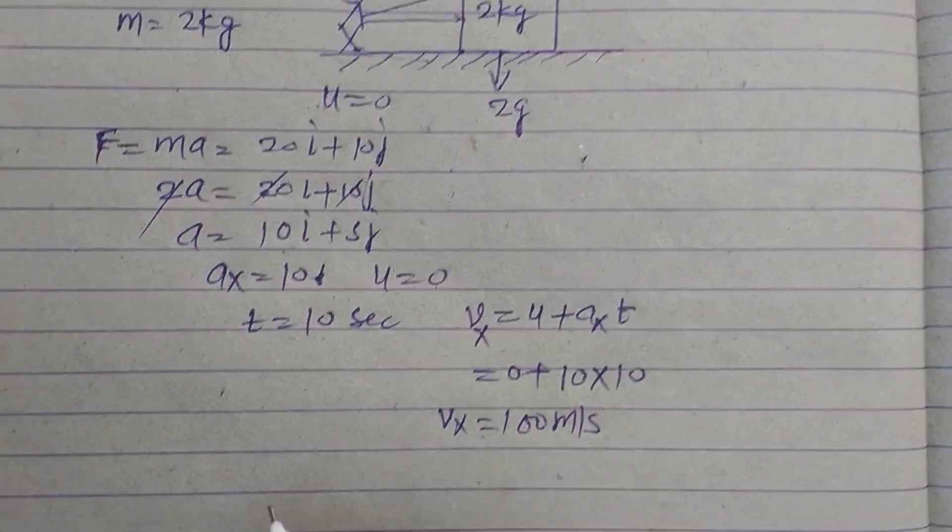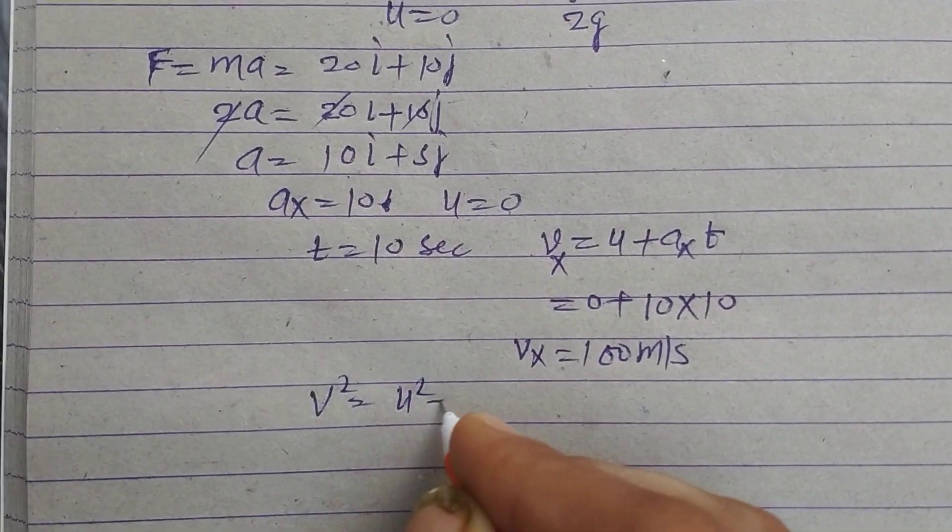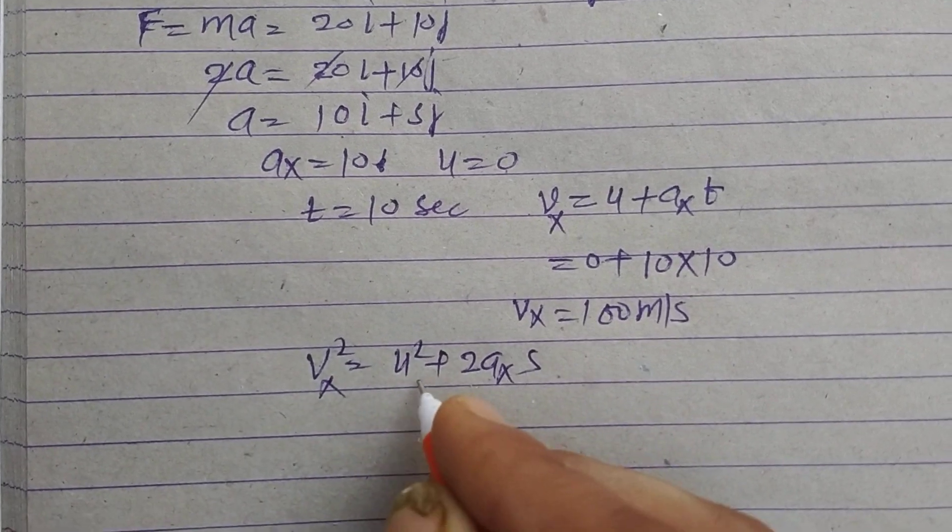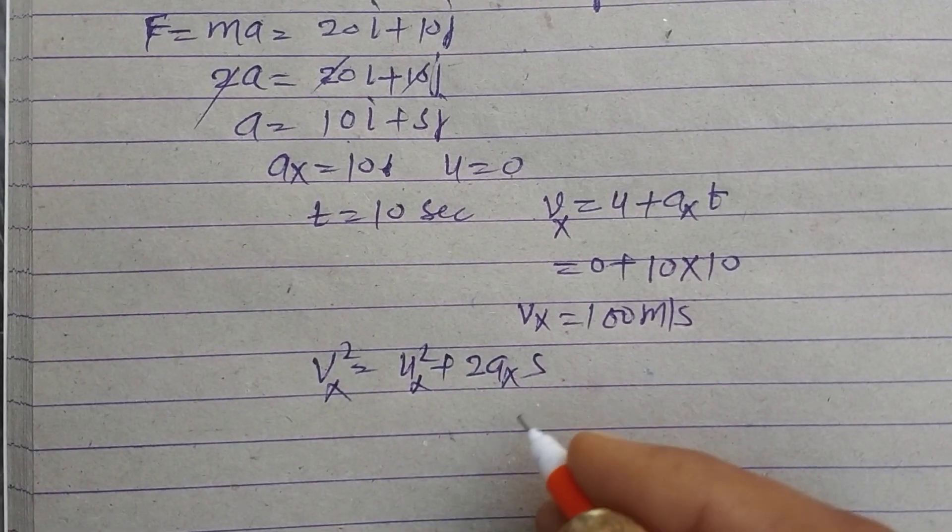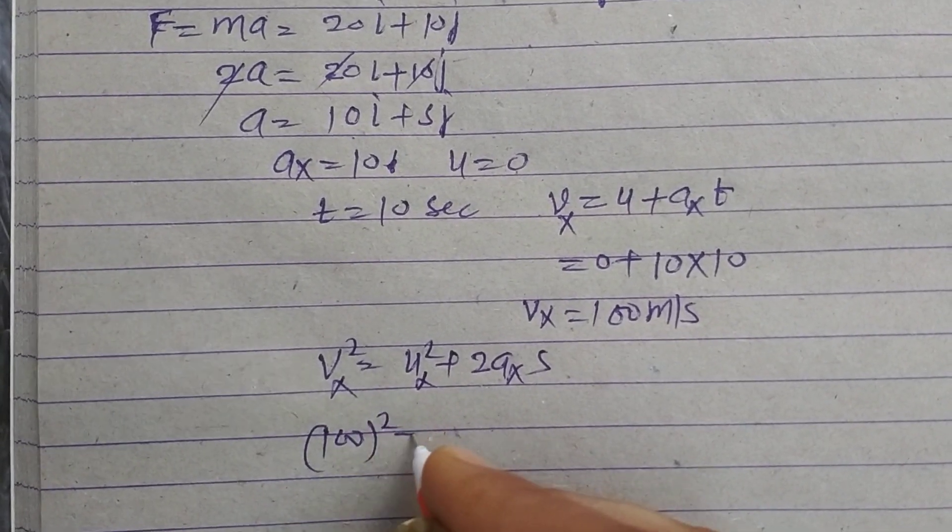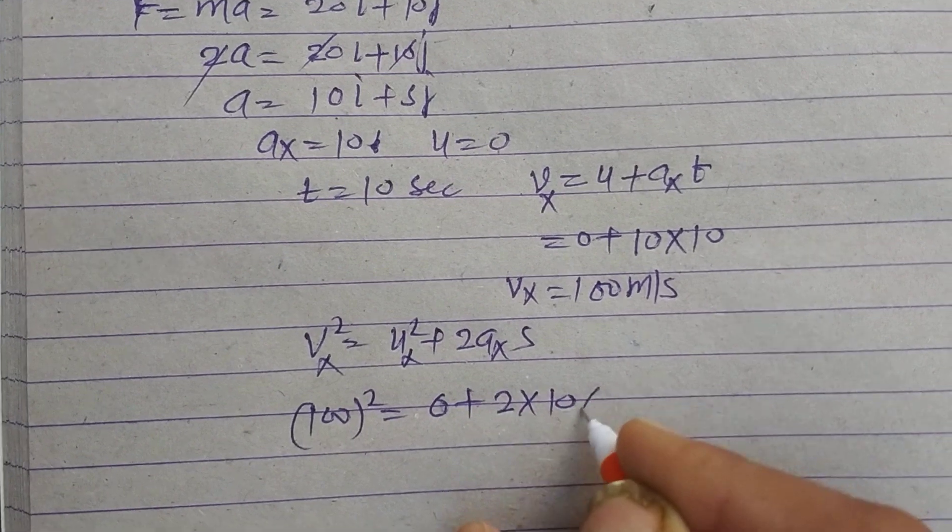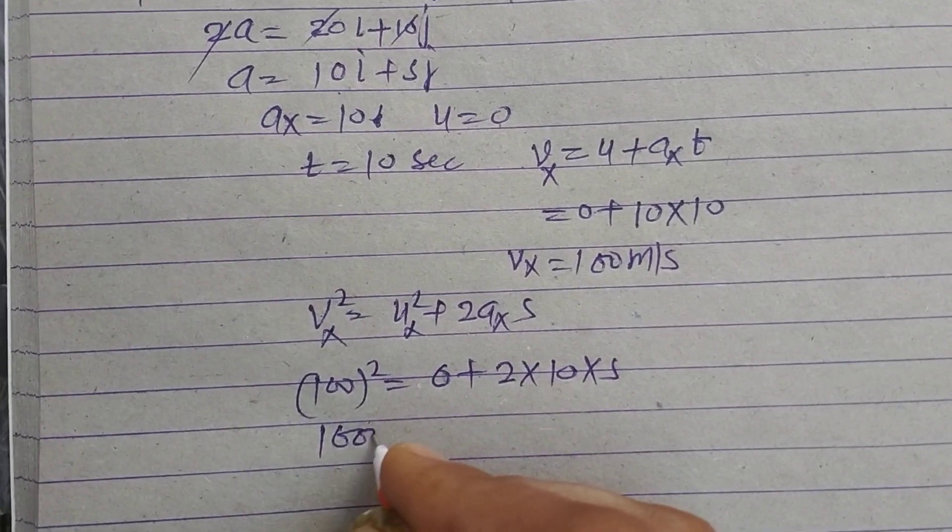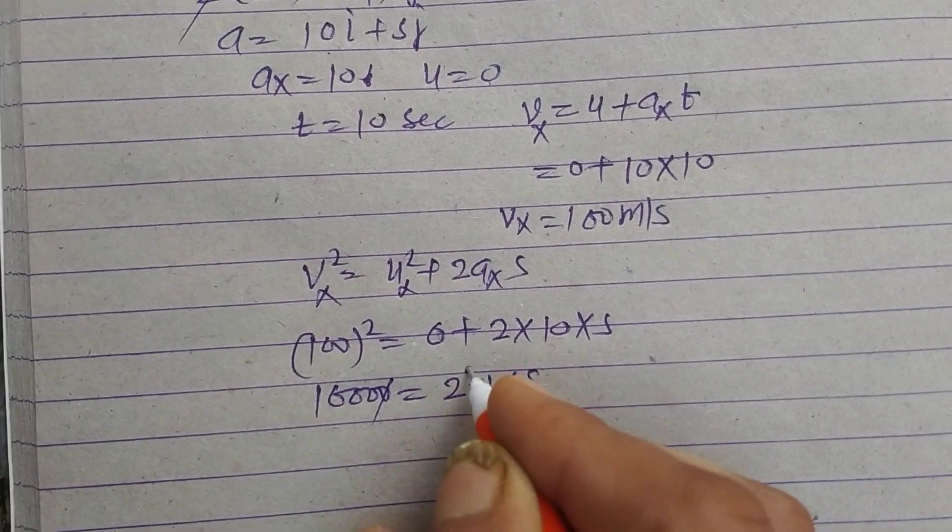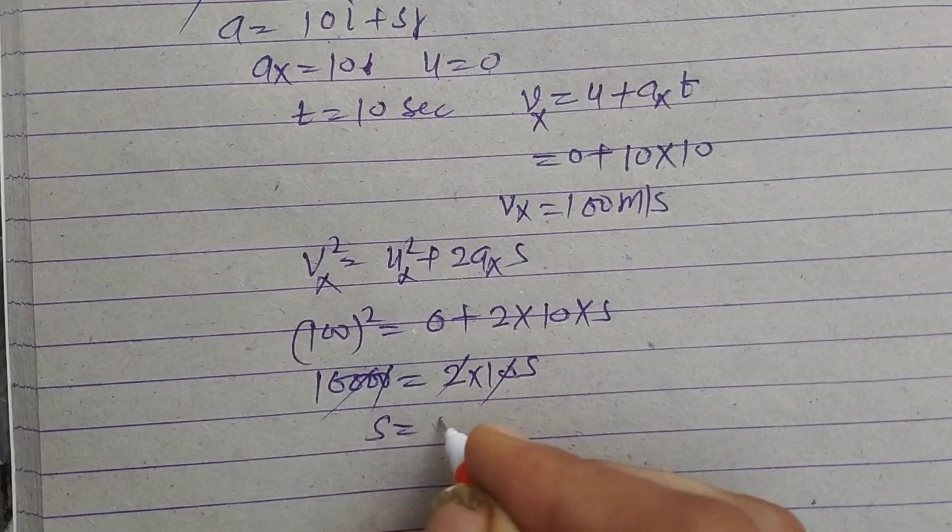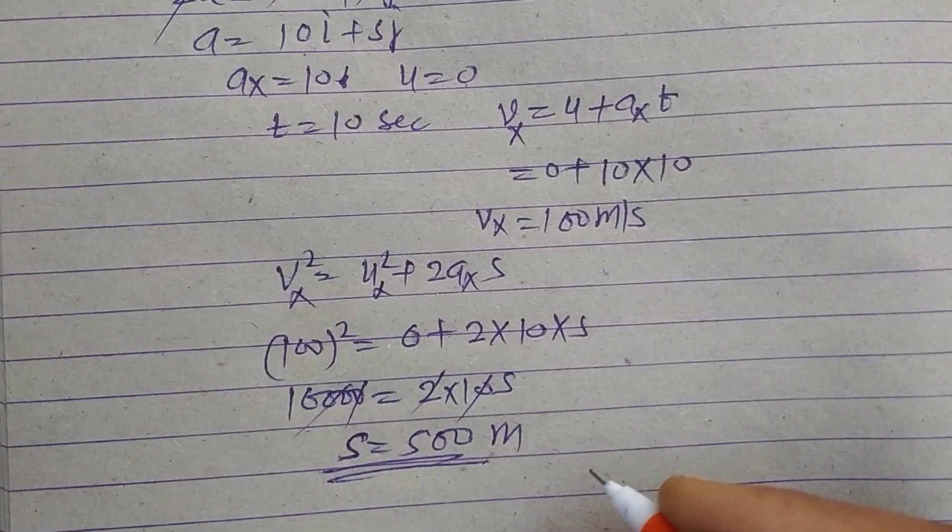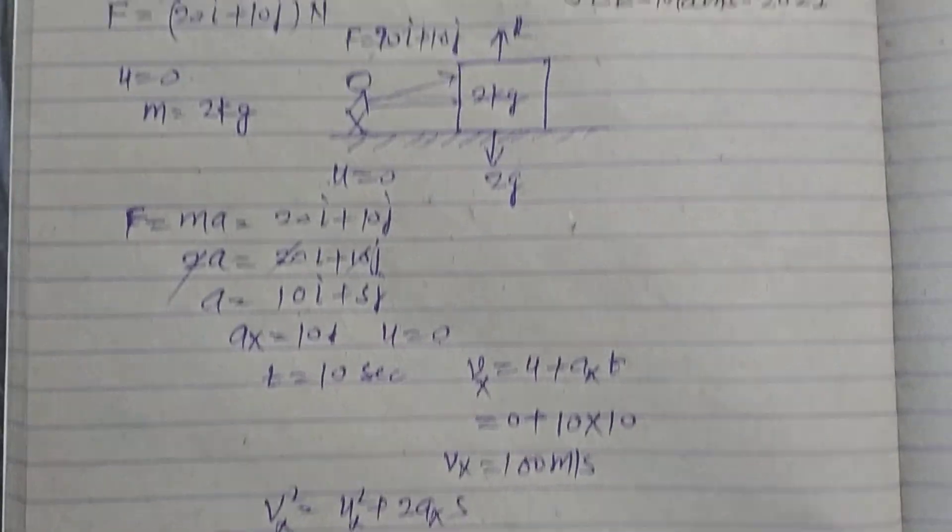Now the distance covered using third equation of motion vx square equal to ux square plus 2 ax into s. So this is 100 square, this is 0, ax is 10 into s. So 10000 equals 2 into 10 into s, which gives s equal to 500 meter. So distance covered in x direction after 10 seconds is 500 meter.